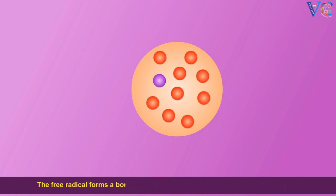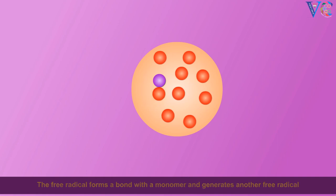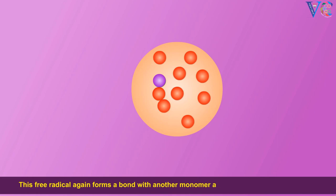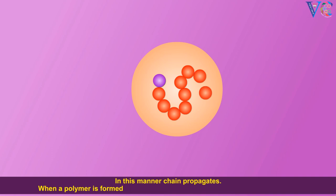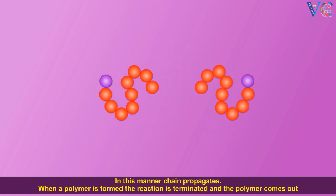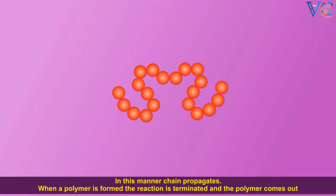The free radical forms a bond with a monomer and generates another free radical. This free radical again forms a bond with another monomer and generates a new free radical. In this manner chain propagates. When a polymer is formed the reaction is terminated and the polymer comes out.